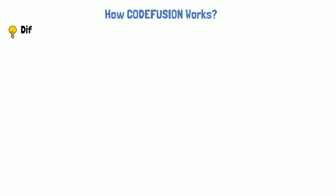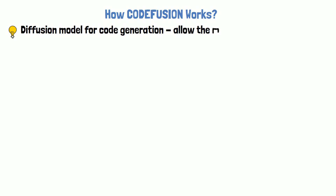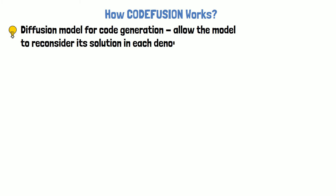Let's move on to see how CodeFusion works. CodeFusion is a diffusion model for code generation. The idea is to allow the model to reconsider its solution in each denoising step, thereby mitigating the limitation explained earlier where code LLMs cannot easily reconsider tokens that were already generated.